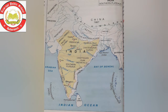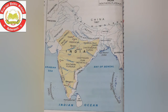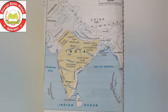Nagpur is very famous for oranges. Mumbai is the capital of Maharashtra. Marathi is the main language. Lavani is the famous dance. Ajanta and Ellora caves are in Aurangabad. Men wear dhoti and shirts, and women wear a nine-yard sari draped in a special way. Ganesh Chaturthi is the main festival.